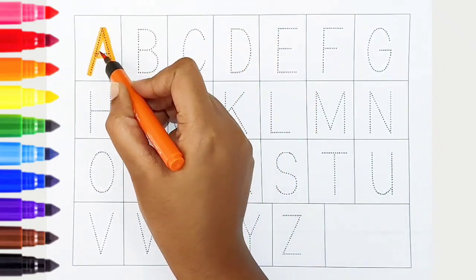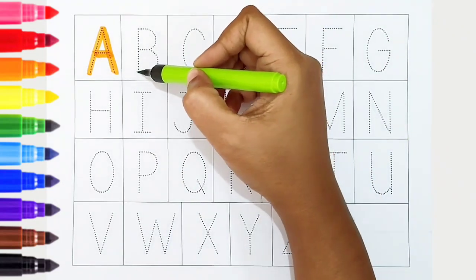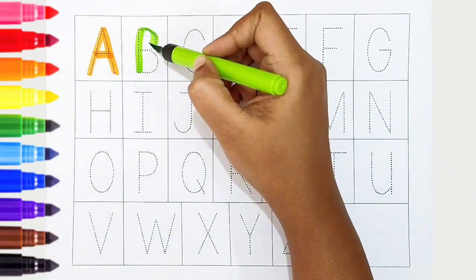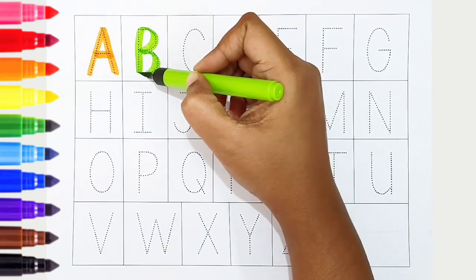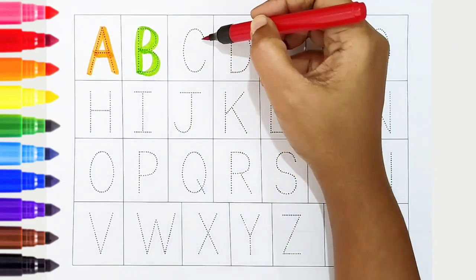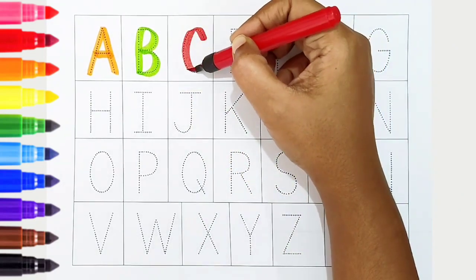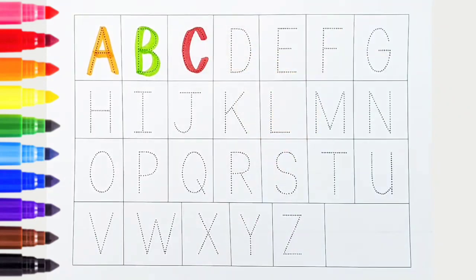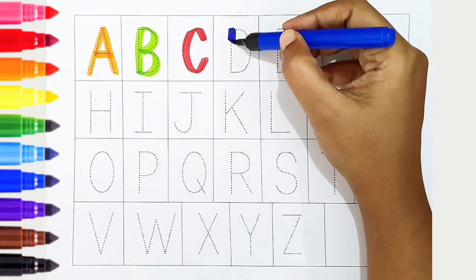...for aeroplane. B, light green color, B is for bat. C, red color, C is for caterpillar. D, dark blue...